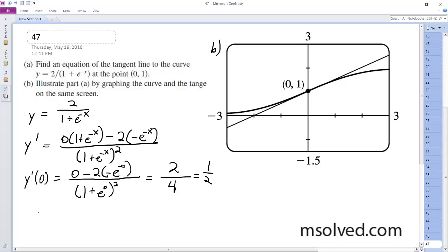Our point slope form: y minus 1 equals 1 half times x minus 0, and then we get y minus 1 equals 1 half x. So y equals 1 half x plus 1.